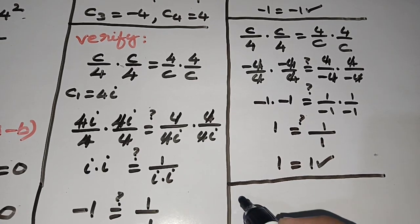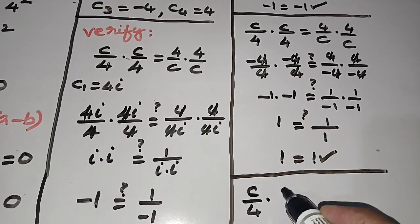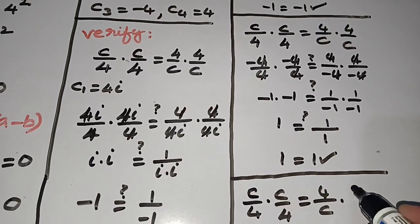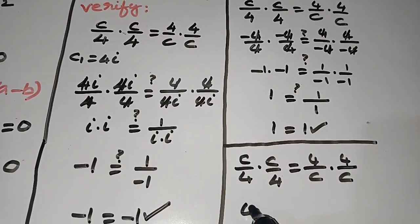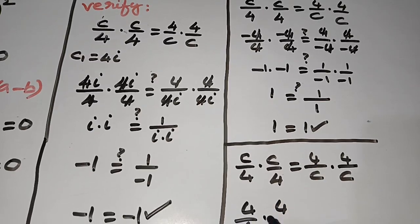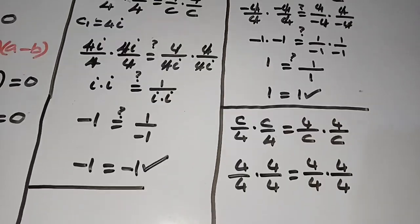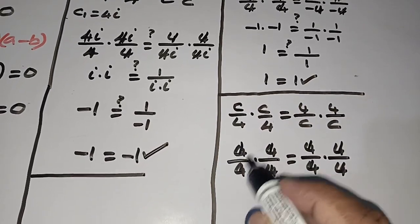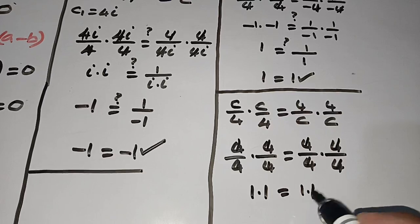The fourth value is c₄ = 4. Substituting 4 in the equation: 4/4 times 4/4 equals 4/4 times 4/4. Cancelling all the 4s, we have 1 times 1 on the left side and 1 times 1 on the right side.